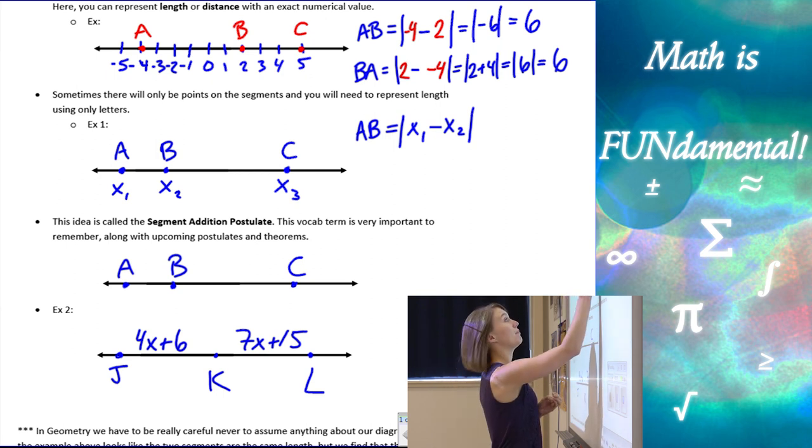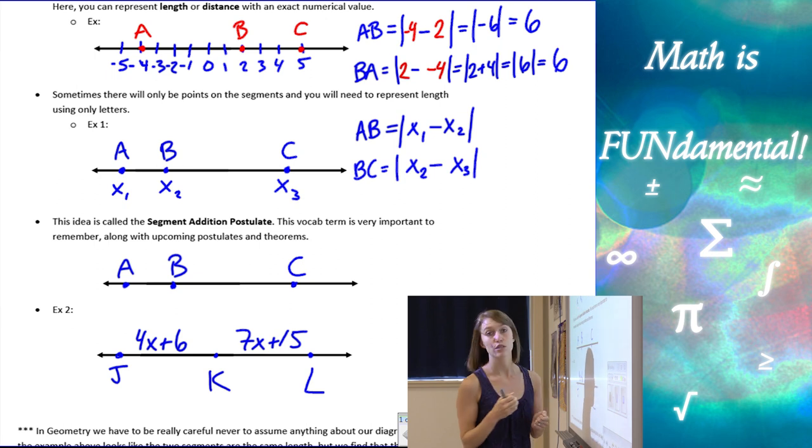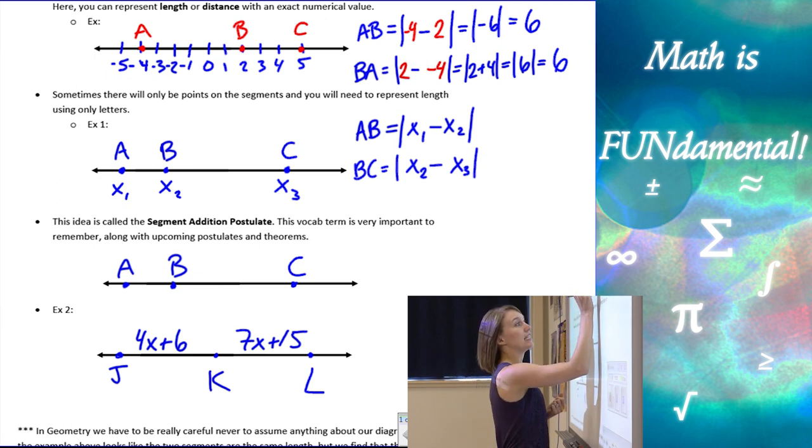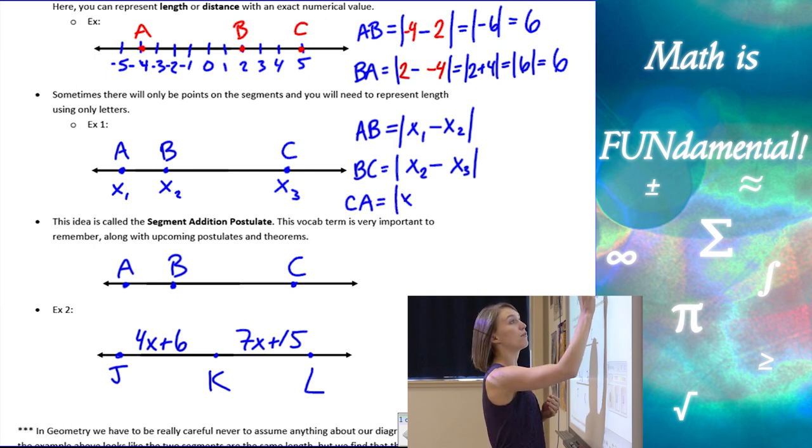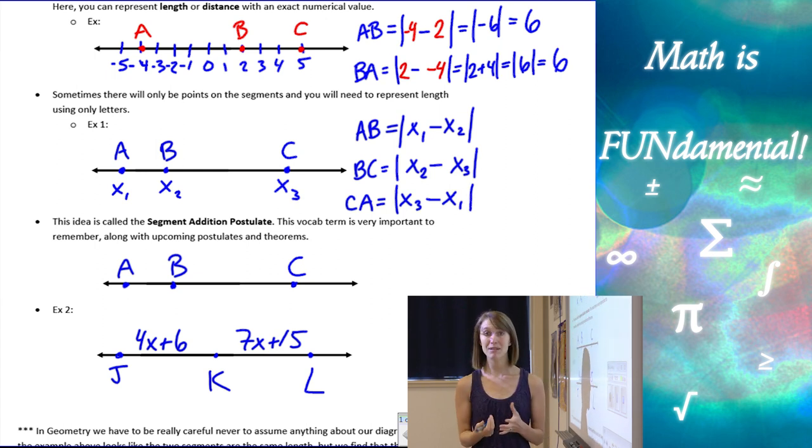If I wanted BC, I would have the absolute value of X2 minus X3 to represent the length of BC. If we wanted, let's see, CA or AC, we would have the absolute value of X3 minus X1. And because we don't actually know what those numbers are, we don't know what those coordinates are, we can't go any farther than this. This is as far as we can go for those types of problems.